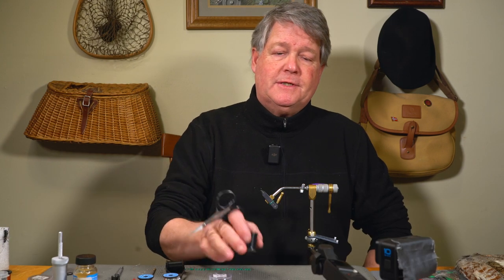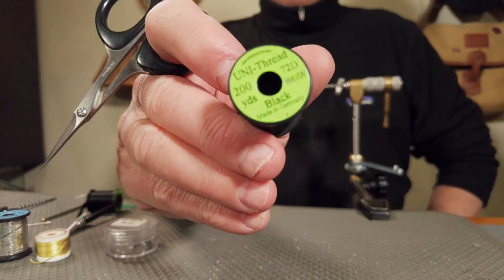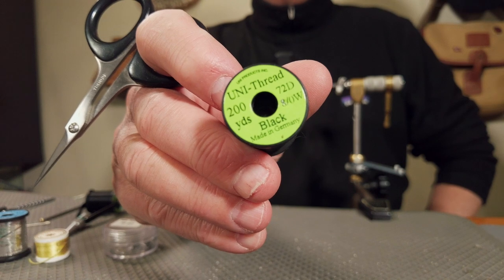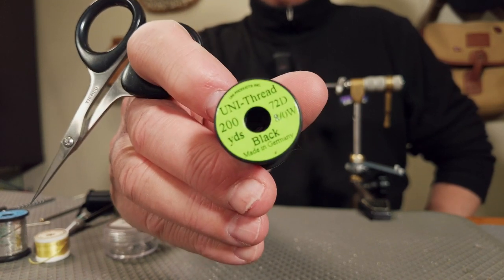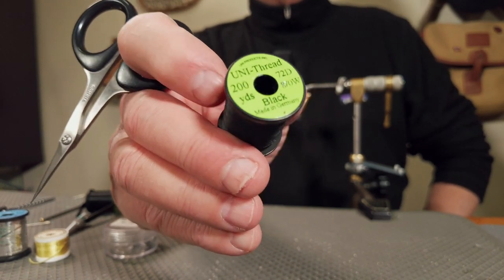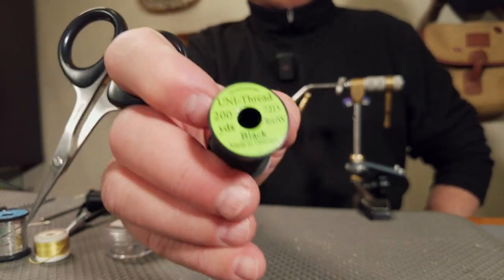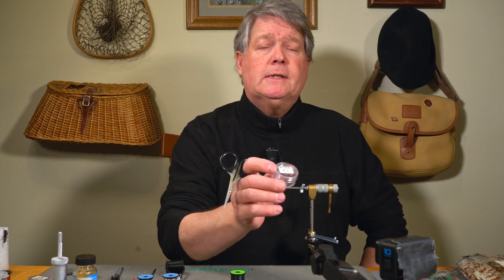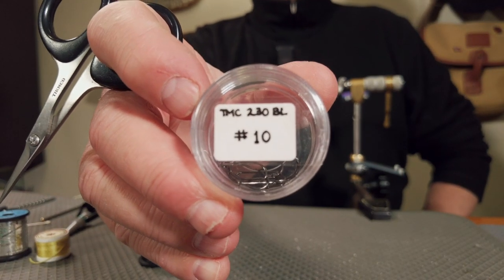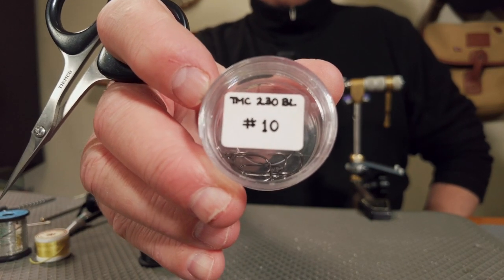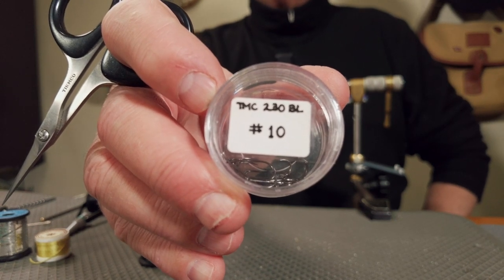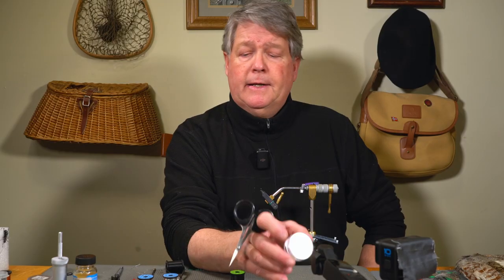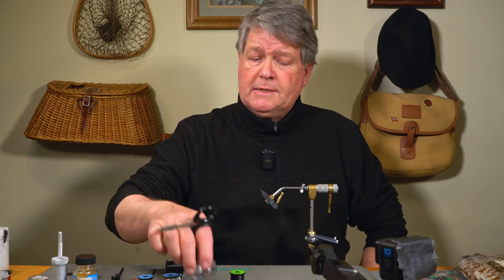First thing, the thread I'm going to be using is an 8-aught unithread. I like it because it gives me good control and it's low bulk. The hook I'm going to be tying this on is a TMCO 230BL. Fulling Mill also makes that same hook as well as Hannock. And I'm going to be tying in a size 10.